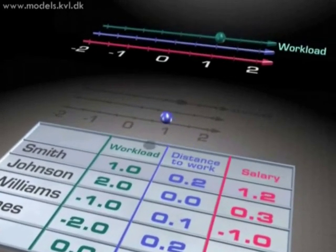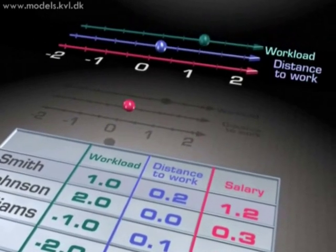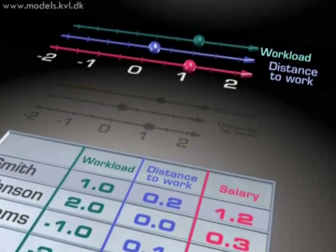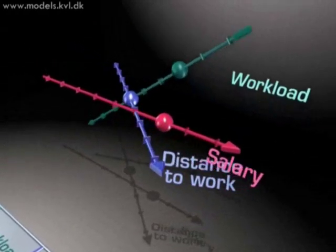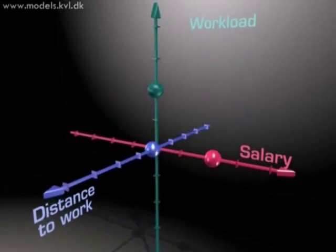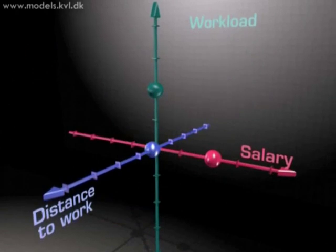Now we can take these numbers, our measurements, and put them on an axis, one for each variable. So nothing has really been changed so far. We are just plotting the data on these axes. And we can represent them in a coordinate system, a three-dimensional coordinate system.